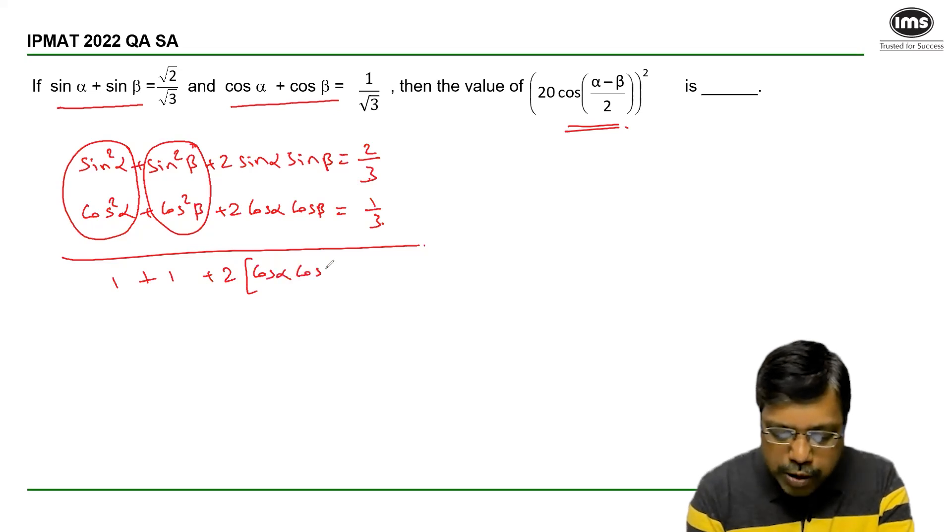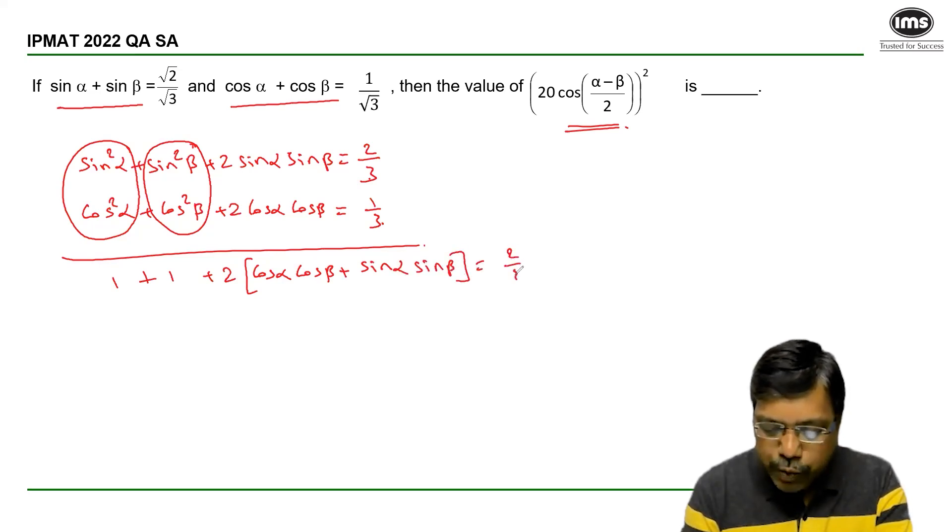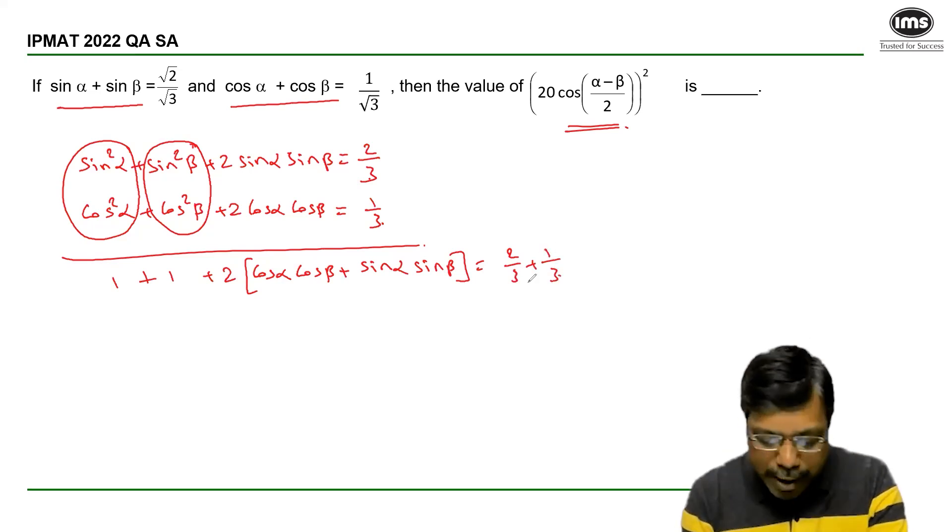cos alpha cos beta plus sin alpha sin beta is equal to 2 by 3 plus 1 by 3 which is equal to 1.